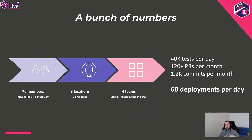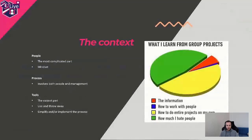Based on all the practices we put in place, we are now able to do 60 deployments per day and run approximately 40,000 tests per day, which is a really good number considering we started from nothing. There are other numbers too — like pull requests merged — but we don't really care about those as much.